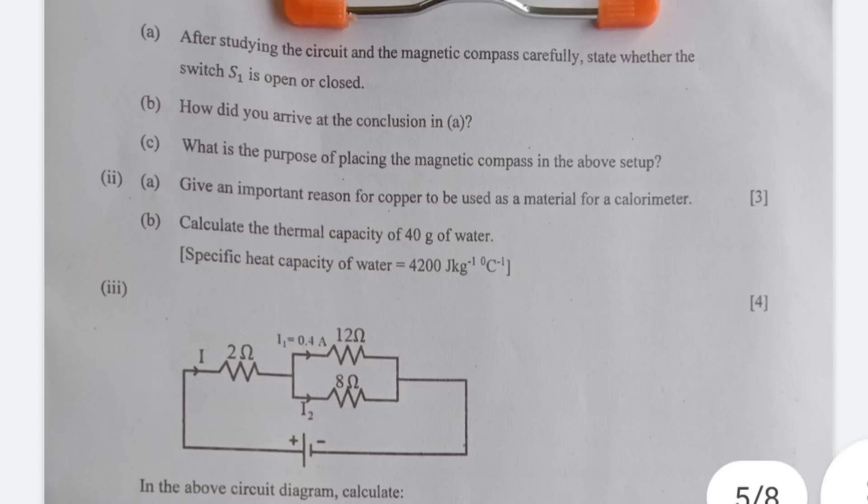Now let's move to 2A. Give an important reason for copper to be used as a material for a calorimeter. The specific heat capacity of copper is low and this is the operative part and especially if they are going by the word important. But students may also write that it takes negligible amount of heat from its contents to attain thermal equilibrium.